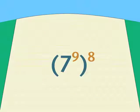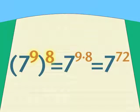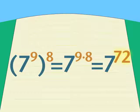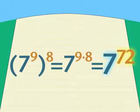How did you do? Did you use our general rule to raise one power to another? The power 9 to another, the power 8? Multiply the exponents: 9 times 8 is 72. The answer is 7 to the power 72.